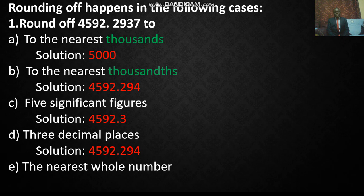To the nearest whole number, we have 4,592. And because 0.2 is less than 0.5, the number remains 4,592.